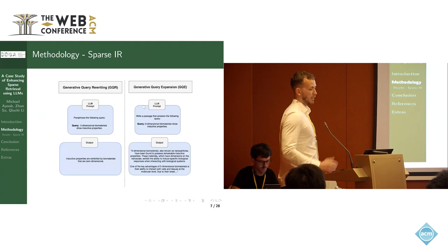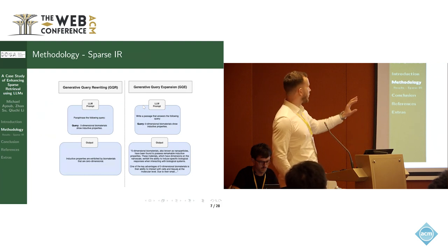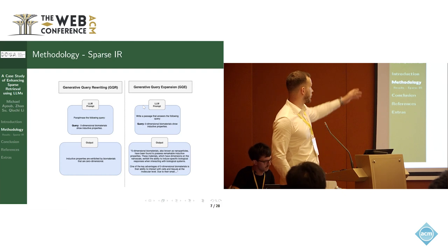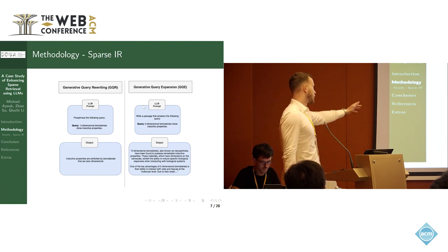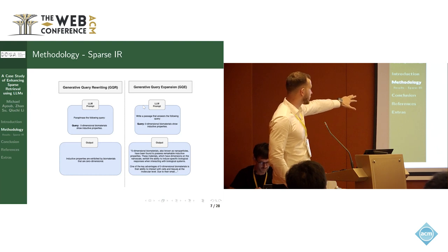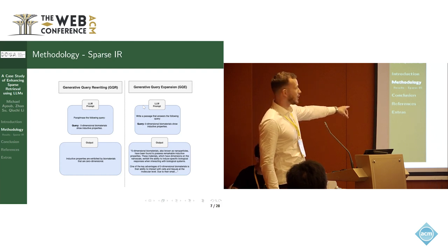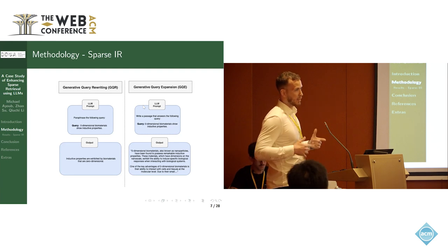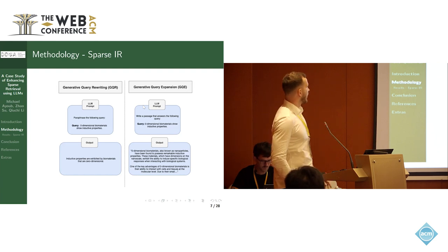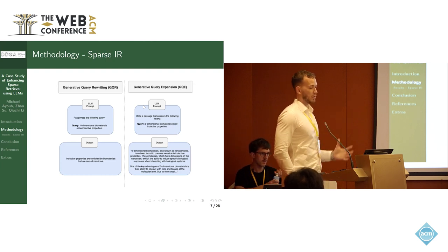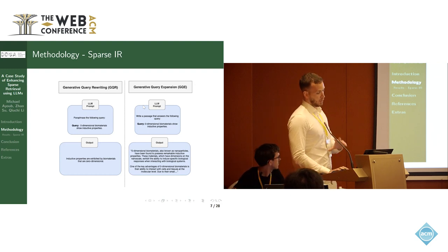Our methods for sparse IR are the two proposed here. On the left is what is known as generative query rephrasing (GQR) — we try to paraphrase the query such that the output tries to rephrase the original query. The structure ends up being very similar to the original query with not many new terms added. The idea is that this rephrasing strategy will help generate new unique keywords that might be beneficial for sparse IR methods like BM25, creating overlap between query and document.